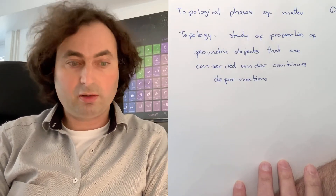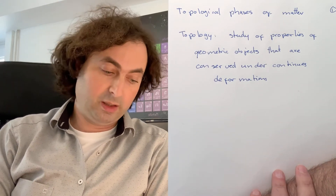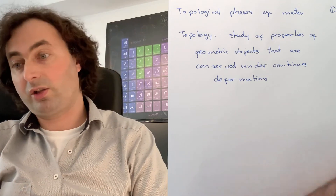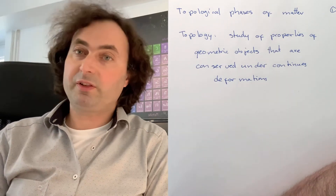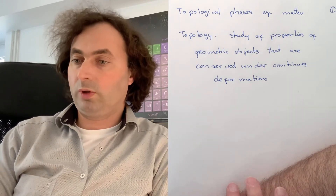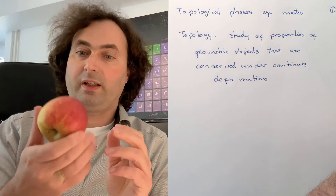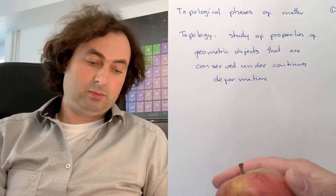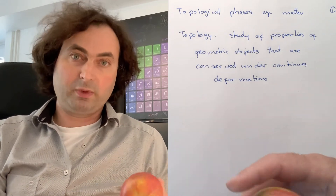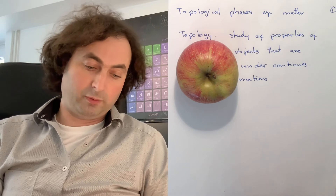When we talk about topology, we talk about the study of properties of geometrical objects that are conserved under continuous deformations. So two objects might be different, but if you can continuously move from one object to the other, we call them to have the same topology. If we take, for example, an apple, then this is almost a sphere — of course it has some dents, it's not a perfect sphere. And if you look at the shape or the surface of an orange, then comparing apple and orange, they have the same topology.